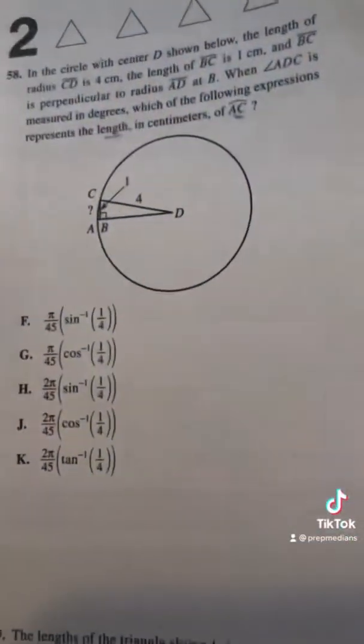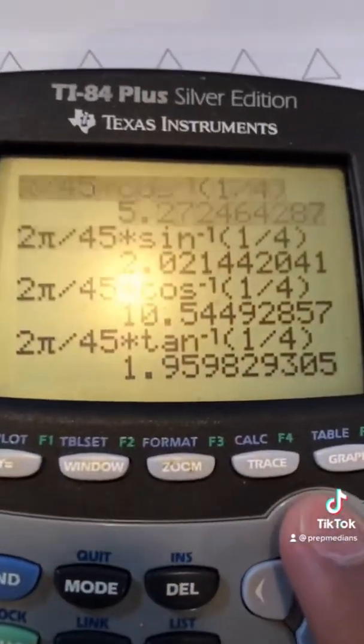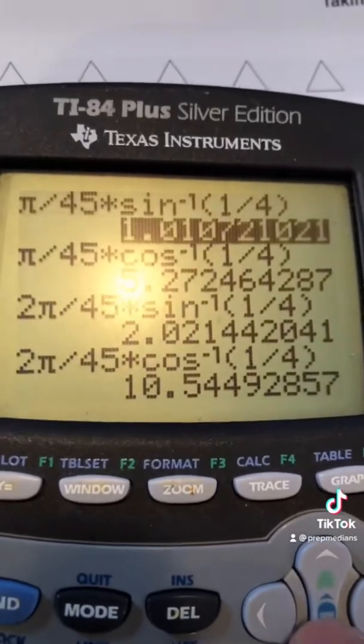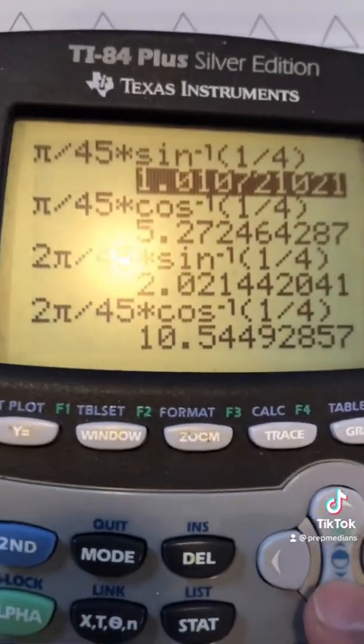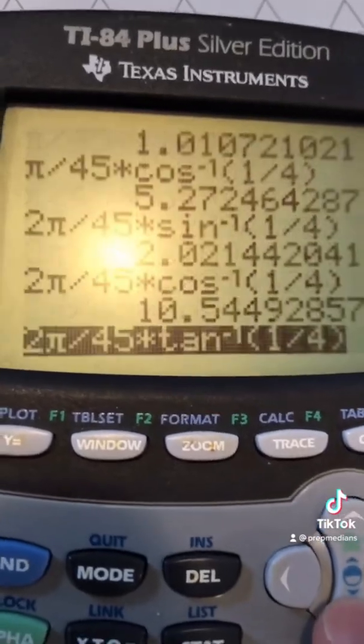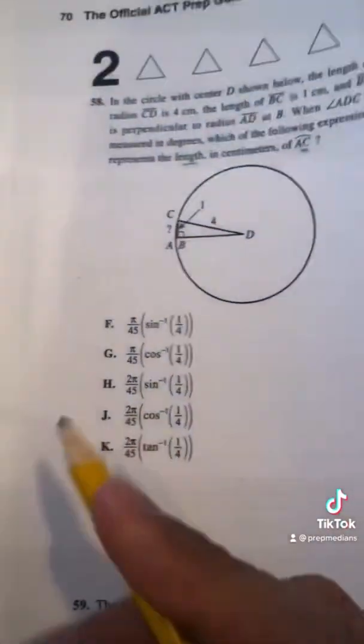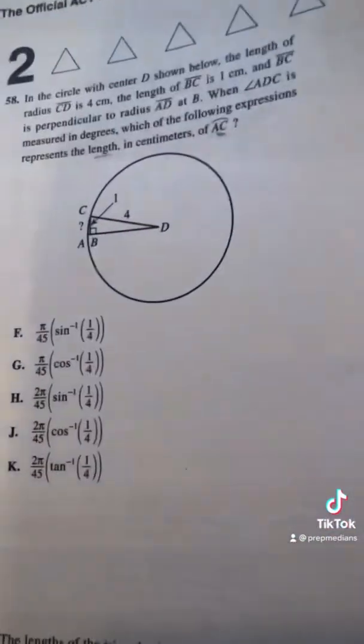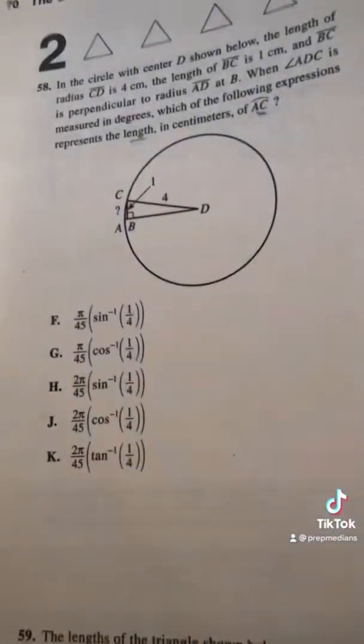Now, for this dramatization, what I've done is already taken the answers and plugged them into the calculator. But what you'll see is that the first choice is the only one that's even close to 1. The other ones are 5.2, 2.0, 10.5, and this last one is 2. So what we do is we circle F, we call it a day, and then you can go ahead and frantically bubble in the other answers. But at least you've gotten this point.